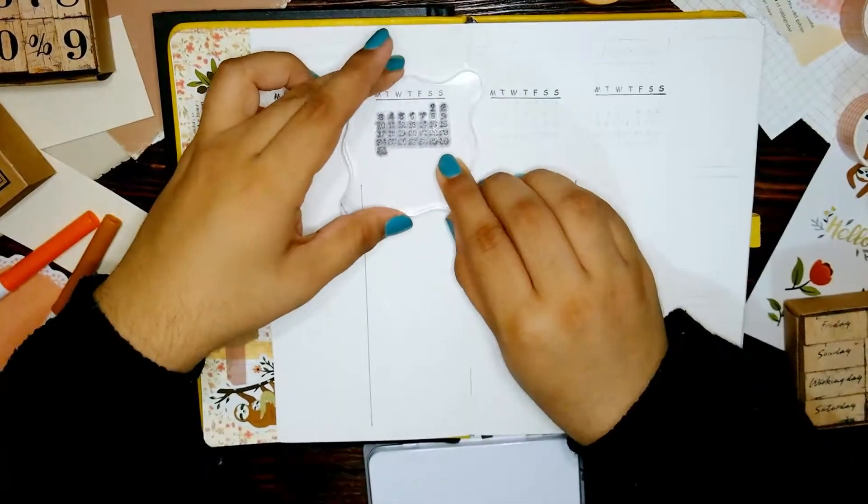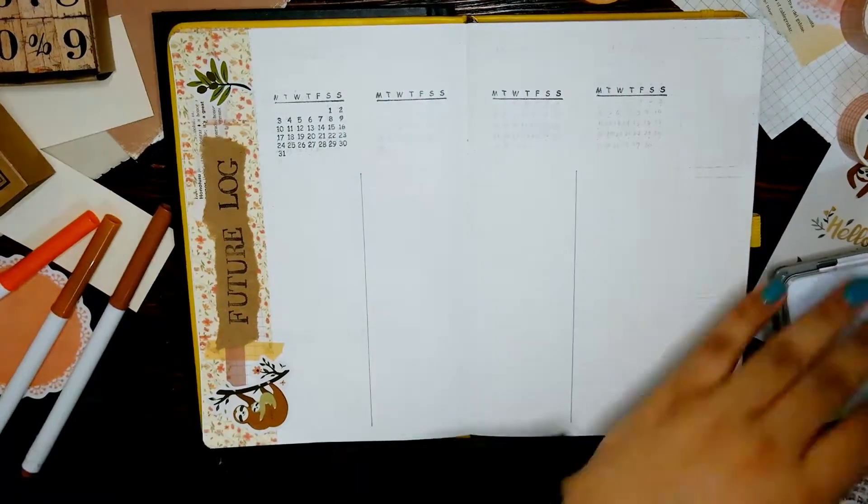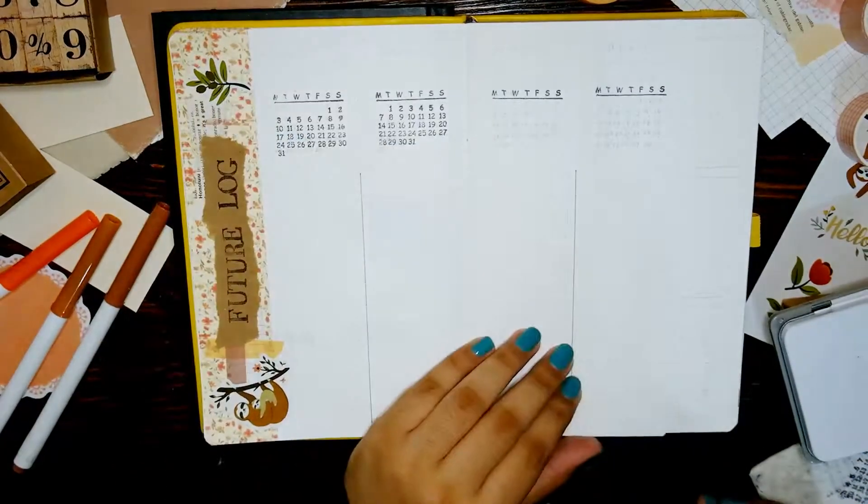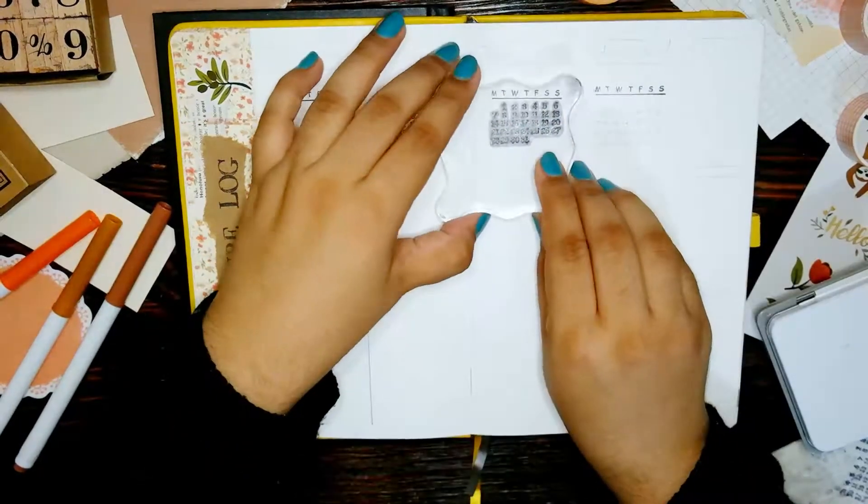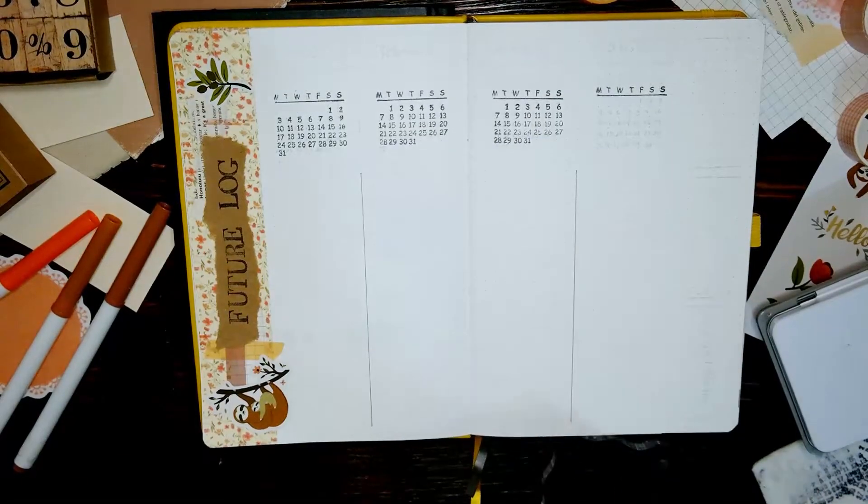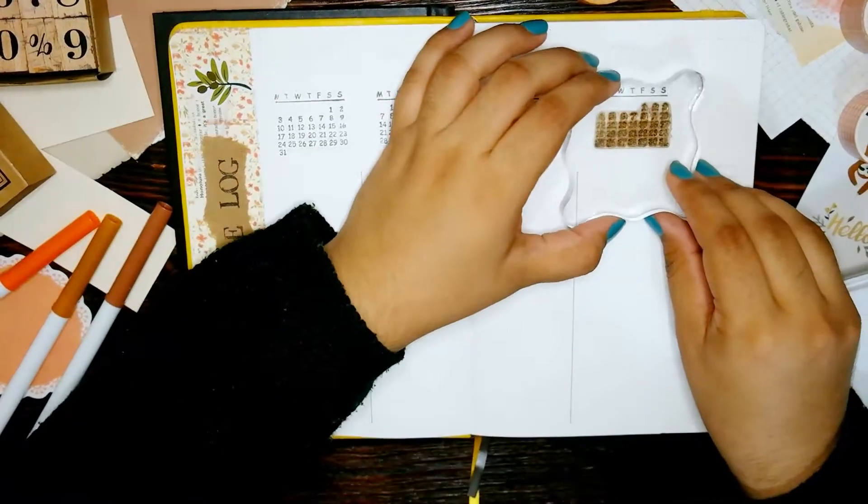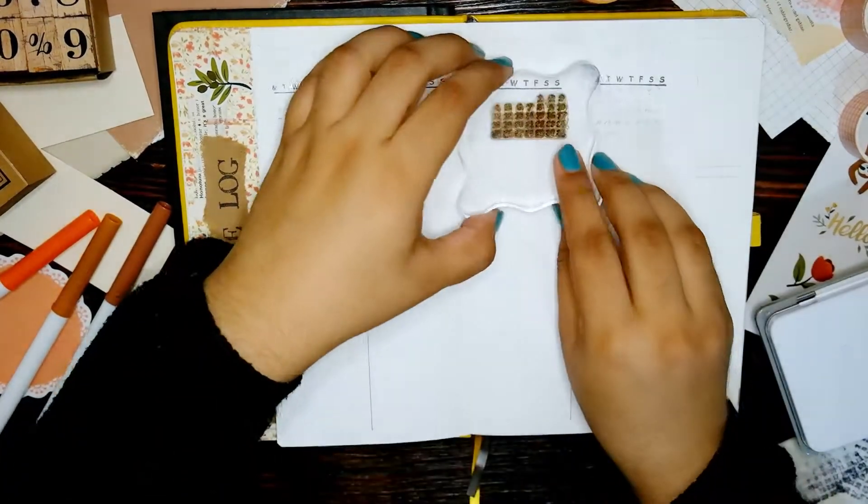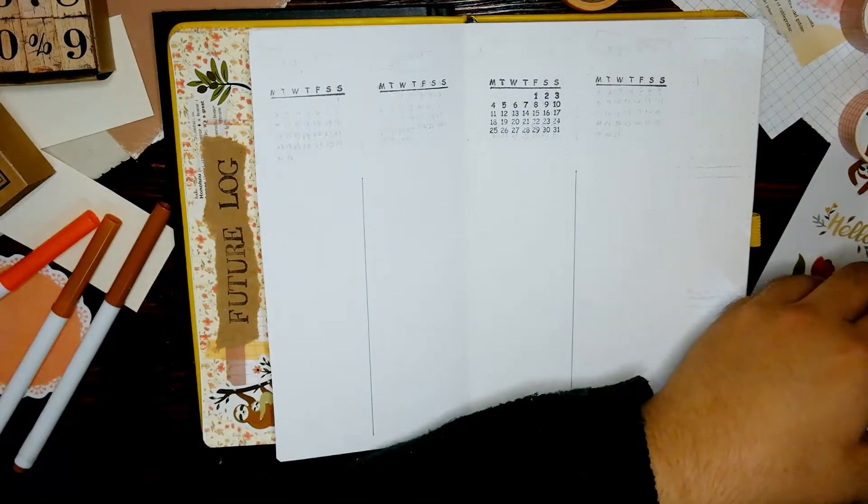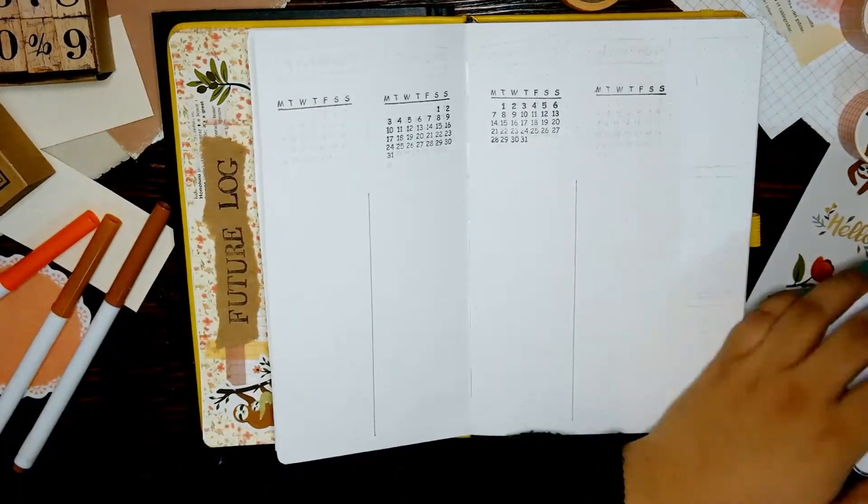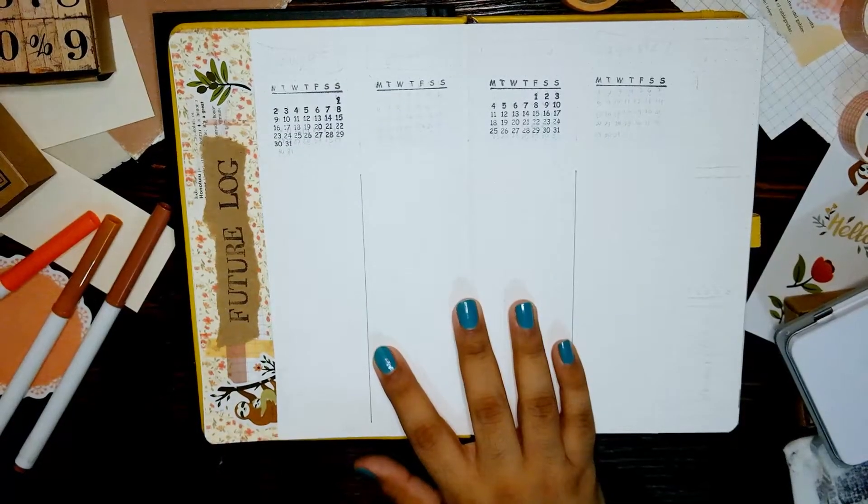The calendar stamps that I have are all full months and the easiest way to fix that is by just wiping off the ink from the unnecessary numbers or maybe by going over with a white gel pen or with whiteout but in the end it's a detail I'm completely fine with letting it go so you know I just didn't want to put much effort into it.